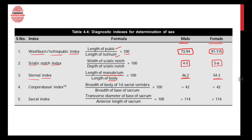Then there is the coxo-sacral index, in which the breadth of the body of the first sacral vertebra is divided by the breadth of the base of the sacrum, then multiplied by 100. If it is more than 42, then it is the body of a male, and if it is less than 42, then it is the body of a female.